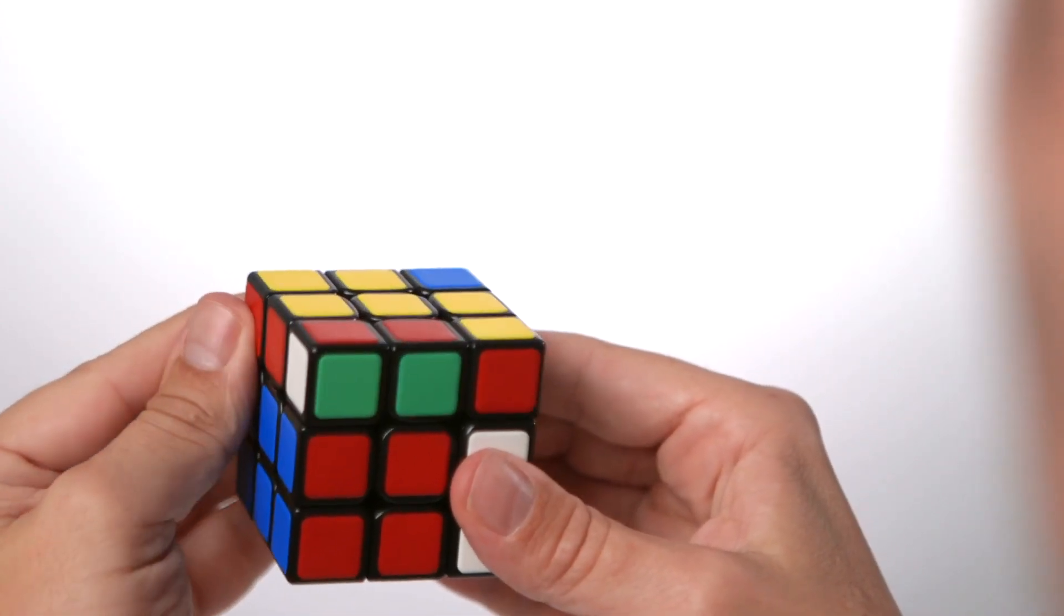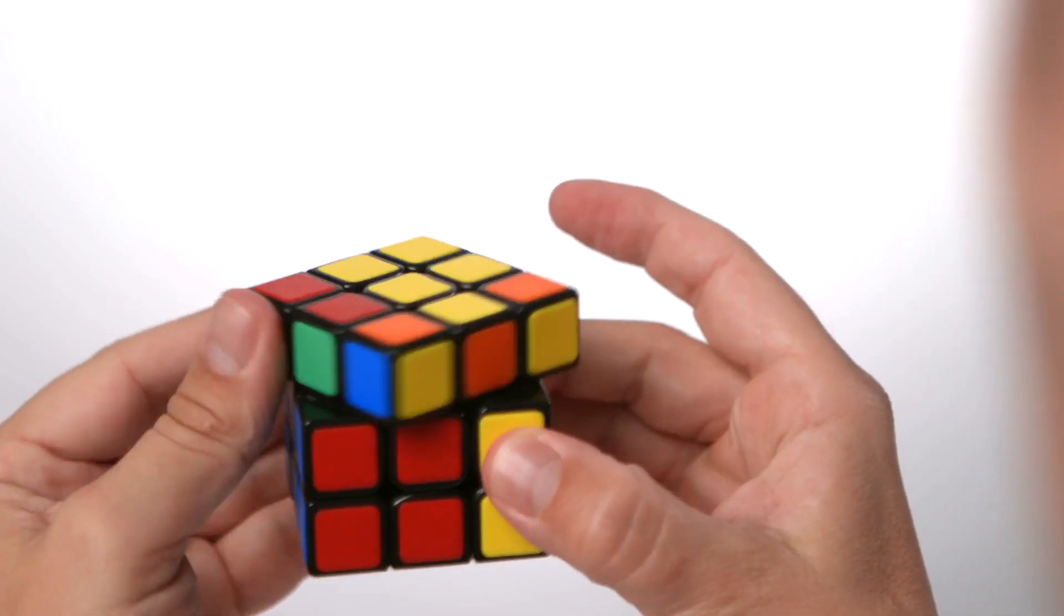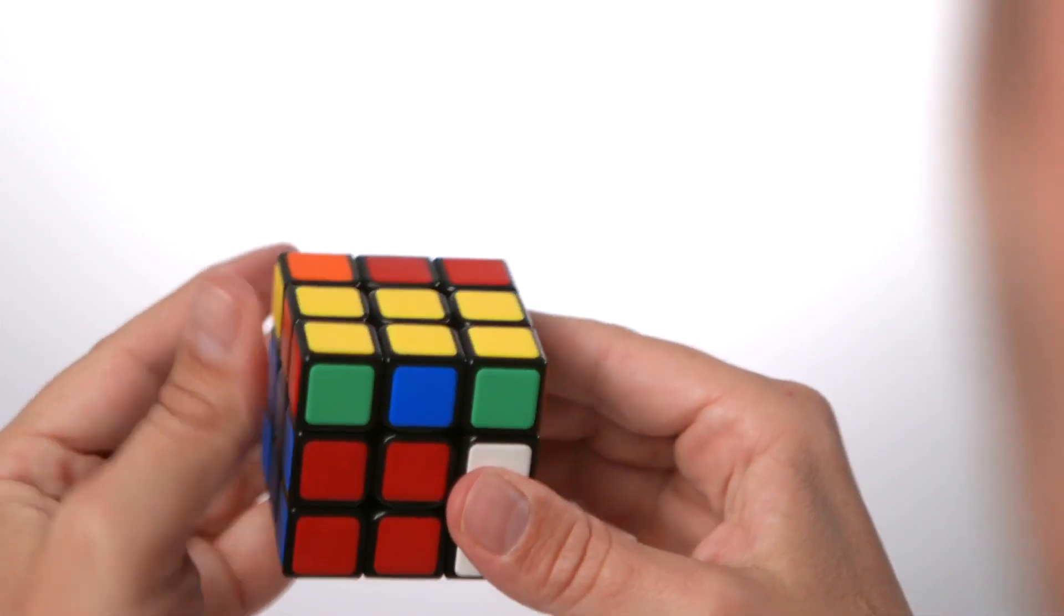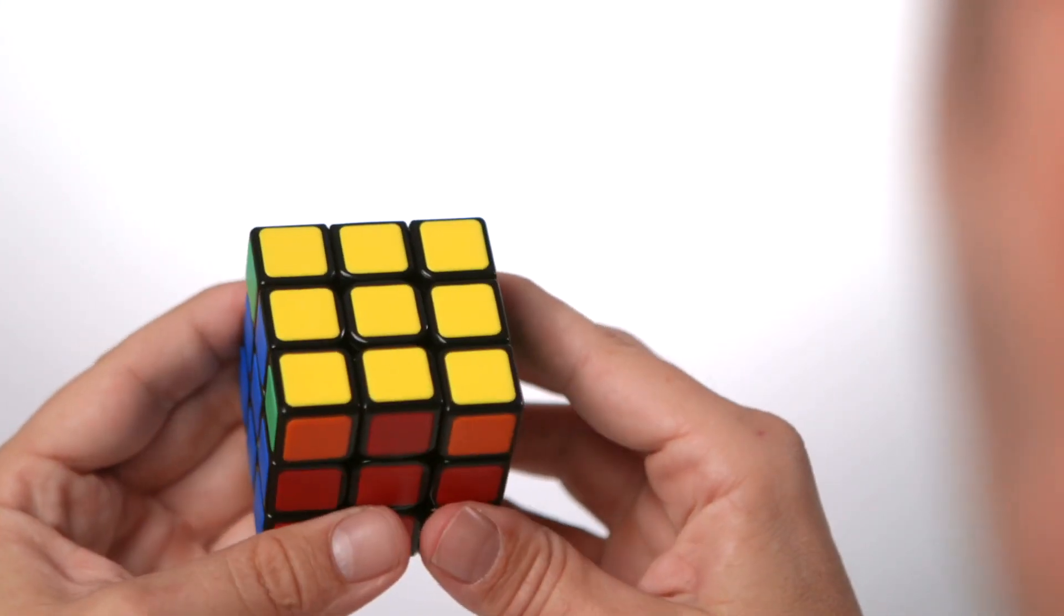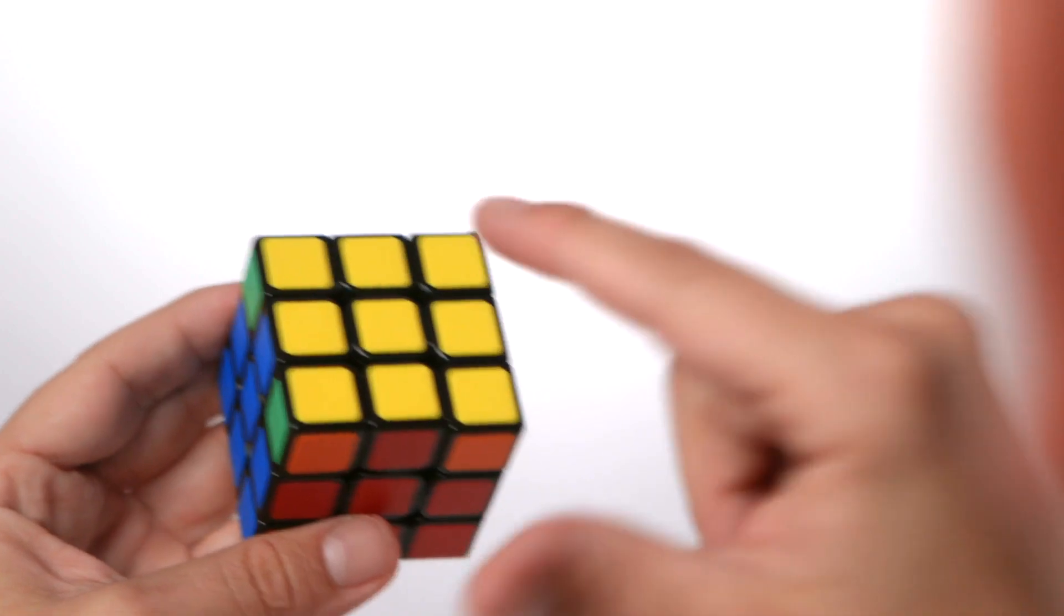Up, round, down, round, up, round, round, down. What you can see is we've now completed the yellow side.